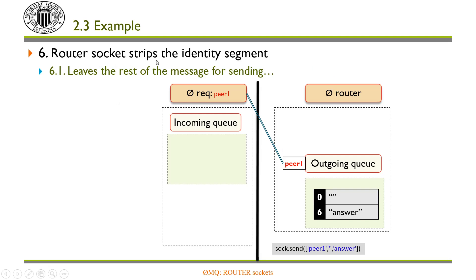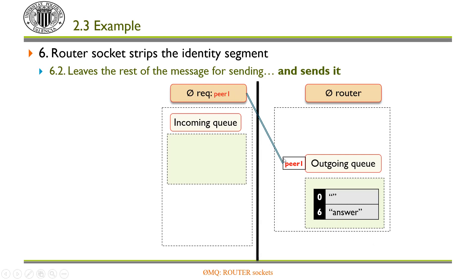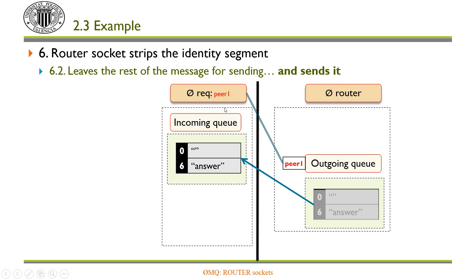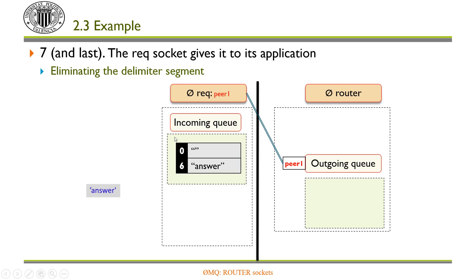The router socket strips the identity segment and leaves the rest of the message in order to send all those segments. It sends that message to the appropriate client, because the first segment has identified the connection to be used. The message is sent and is received by the req socket at the client process. The req socket processes the received message — it checks whether it has an initial delimiter, which it does, so it accepts the message and removes that initial delimiter. In the end, this means the answer string is delivered to the process, so it has received the initial answer sent by the server.